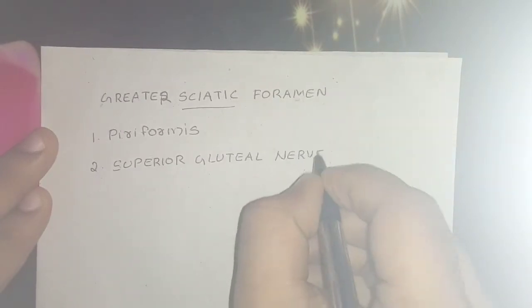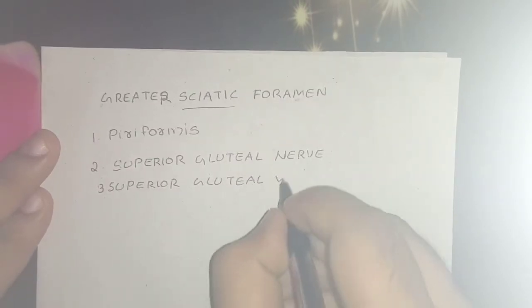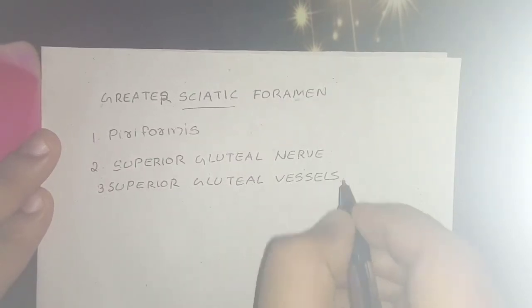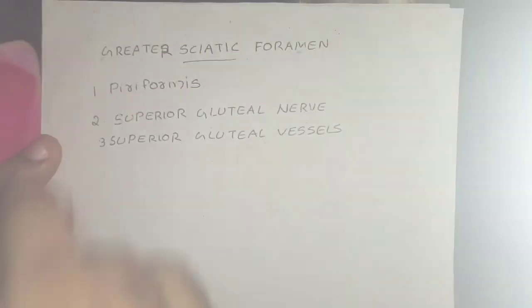The next structures are those passing above the piriformis: that is the superior gluteal nerve and superior gluteal vessels.